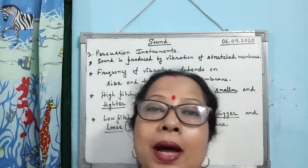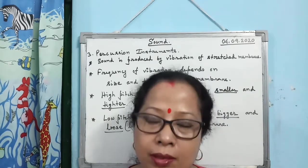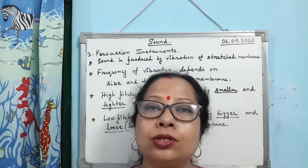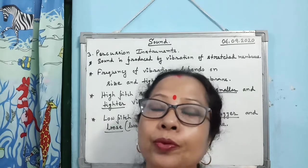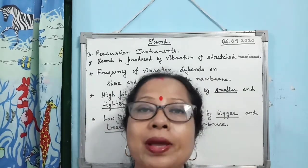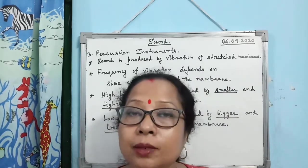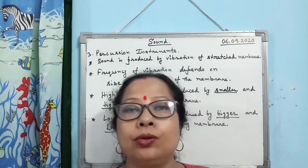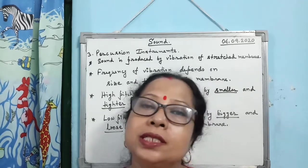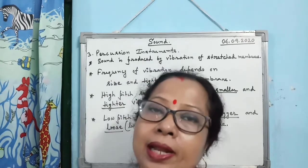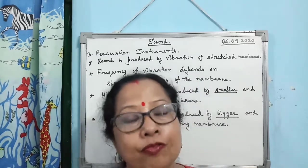Regarding the percussion instrument, the points you have to remember: first point, sound is produced by the vibration of the stretched membrane. Second point, frequency of the sound produced by a percussion instrument depends on the size and tightness of the membrane. Third point, high pitch sound is produced when you use a smaller and tighter membrane — increasing tension and reducing size produces high pitch, high frequency sound.